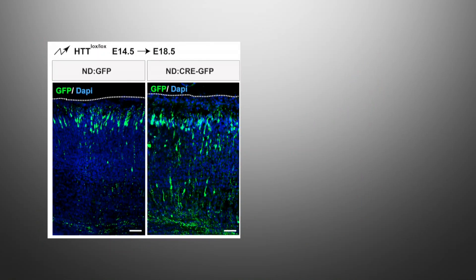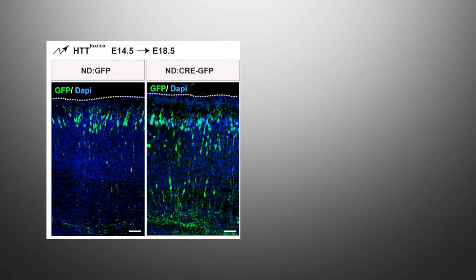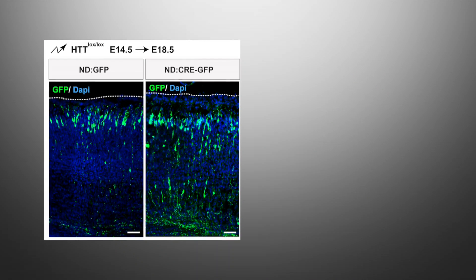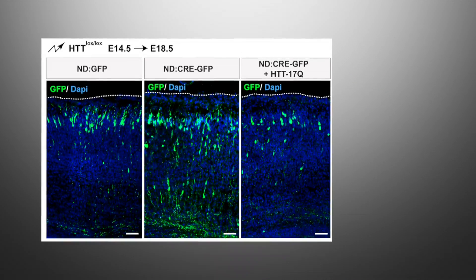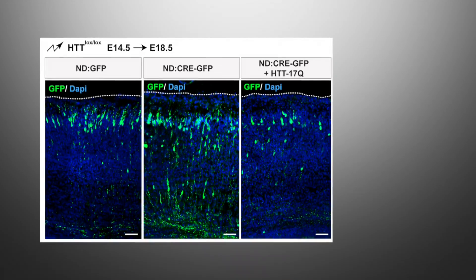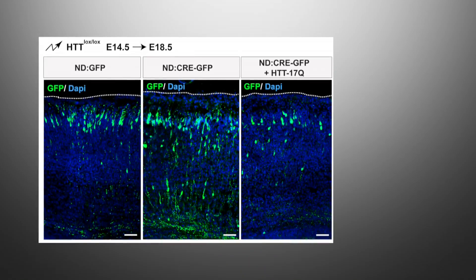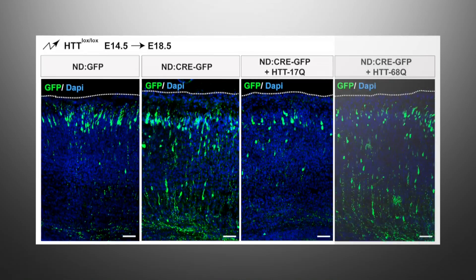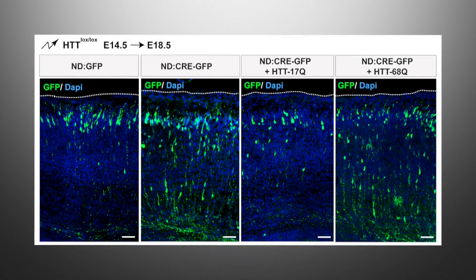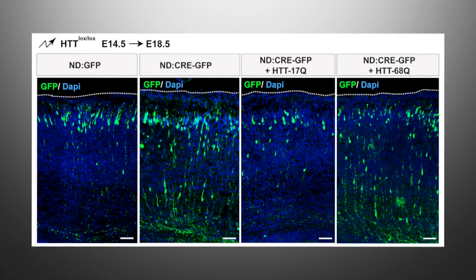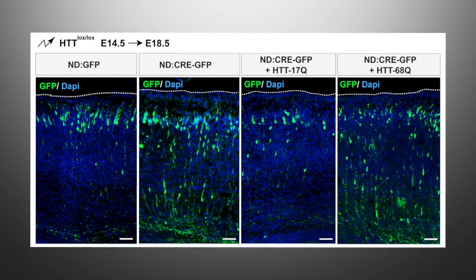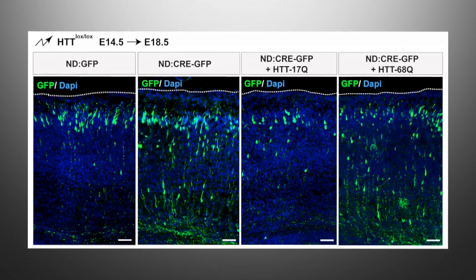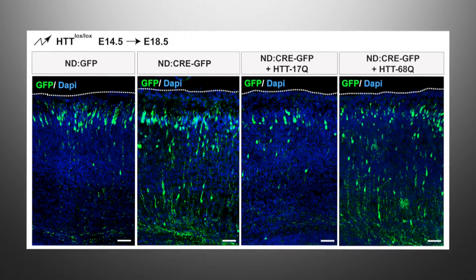As a consequence, absence of Huntington results in delayed migration at E18. This phenotype can be rescued by re-expressing wild-type Huntington. In contrast, mutant Huntington has lost the capacity to promote neuronal migration.